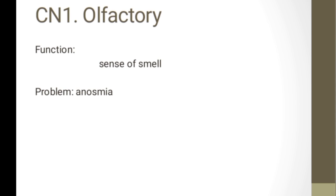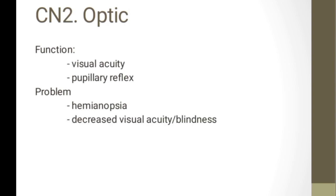Cranial nerve 2 is the optic. From the word itself, we can tell its function is for visual acuity and pupillary reflex — the automatic response of the pupils to light, which regulates the amount of light entering the eye. The common problem here is hemianopsia, or loss of one half of the visual field — meaning only half of your visual field is visible — and it is either unilateral or bilateral. Also blindness or decreased visual acuity.